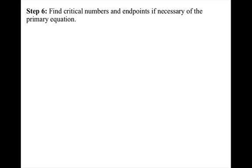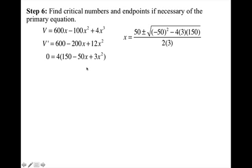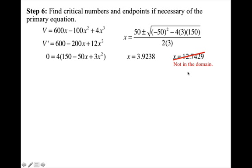Now I'm going to find my critical numbers and endpoints of the primary equation. When optimizing, I'm essentially finding the absolute extrema. I take the derivative, set it equal to 0 — and since we have a polynomial, I don't need to worry about where it does not exist. I factor out a 4 and use the quadratic formula to find x, giving me x equals 3.9238 or x equals 12.7429. Since 12.7429 is not in my domain, I'm not going to include it.